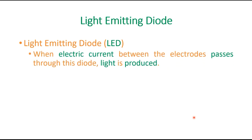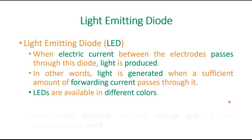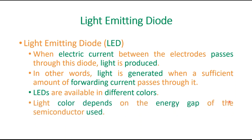What is a Light Emitting Diode (LED)? When electricity passes through this diode between the electrodes, light is produced. You might have seen LEDs — light is generated when a sufficient amount of forward current passes through it. LEDs are available in different colors, and the color depends upon the energy gap of the semiconductors used inside.